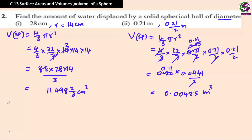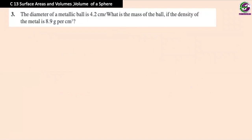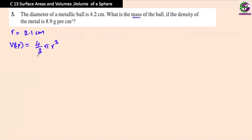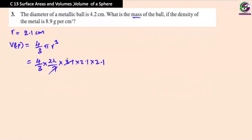The diameter of a metallic ball is 4.2 cm, so the radius is 2.1 cm. What is the mass of the ball if the density of the metal is 8.9 g/cm³? We need to find the volume first. Volume = 4/3 π r³ = 4/3 × 22/7 × 2.1 × 2.1 × 2.1.